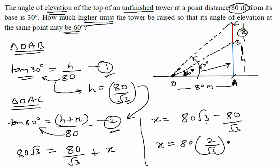If you further try to calculate, it will come out to be 92.38 meters. So, this is X. This is the value of X, which means that I will have to still build 92.38 meters of the tower so that the angle of elevation changes from 30 to 60. So, that is a lot of height. And this is your answer.